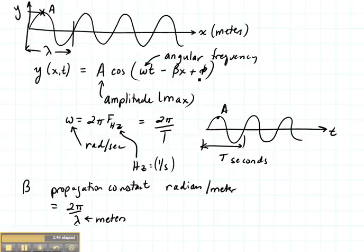The last variable that we have here is phi. Phi is given in radians, and that tells us something about the shift of the wave. We'll be talking about waves that lead and lag in a minute.